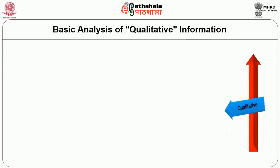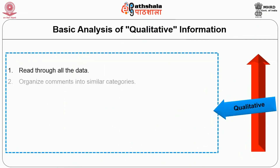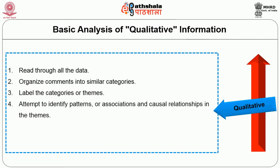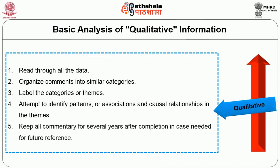Basic analysis of qualitative information: 1. Read through all the data. 2. Organize comments into similar categories — example: concerns, suggestions, strengths, weaknesses, similar experiences, program inputs, recommendations, outputs, outcomes, indicators, etc. 3. Label and identify patterns or associations and causal relationships in the themes. Example: all people who attended programs in the evening had similar concerns; most people came from the same geographic area; most people were in the same salary range; what processes or events respondents experienced during the program, etc. 4. Keep all commentary for several years after completion in case needed for future reference.